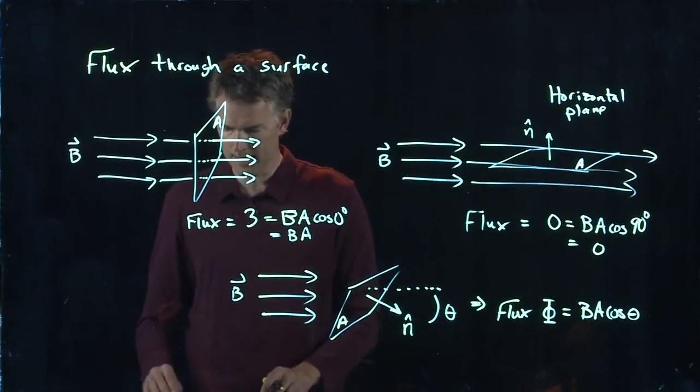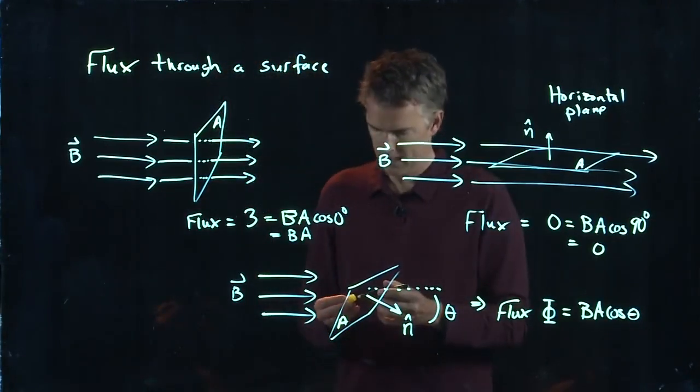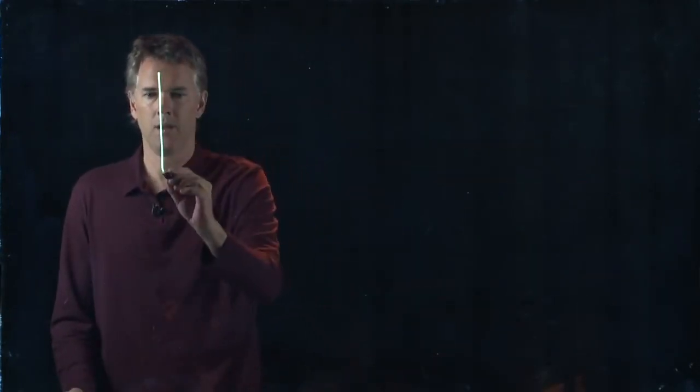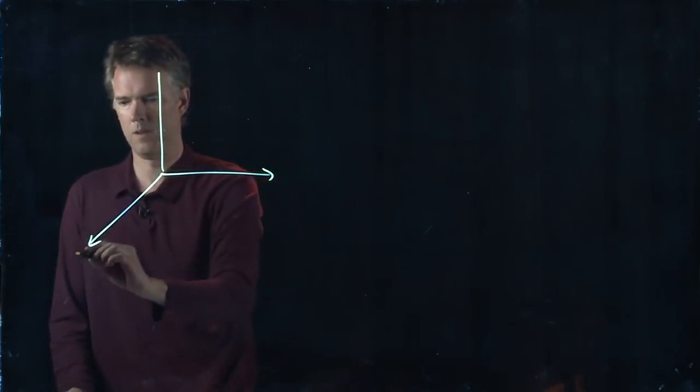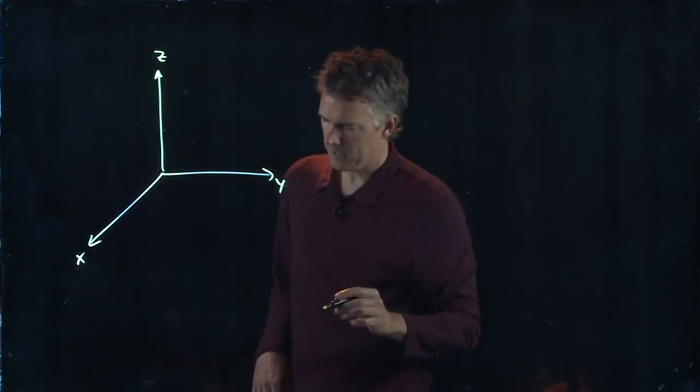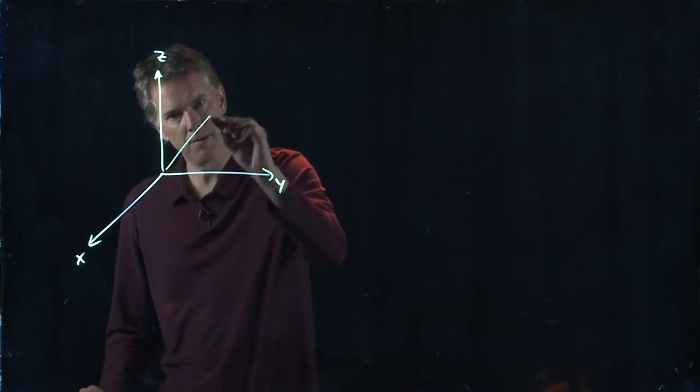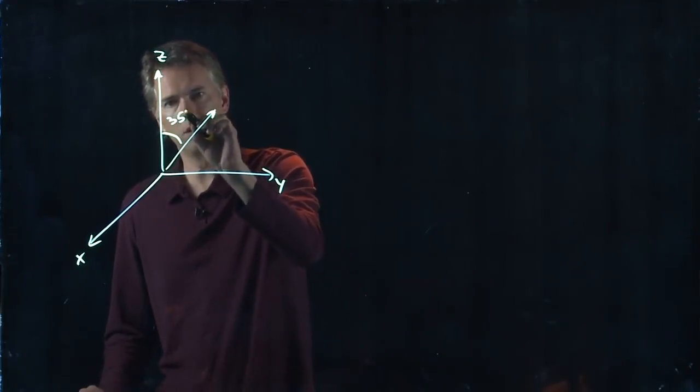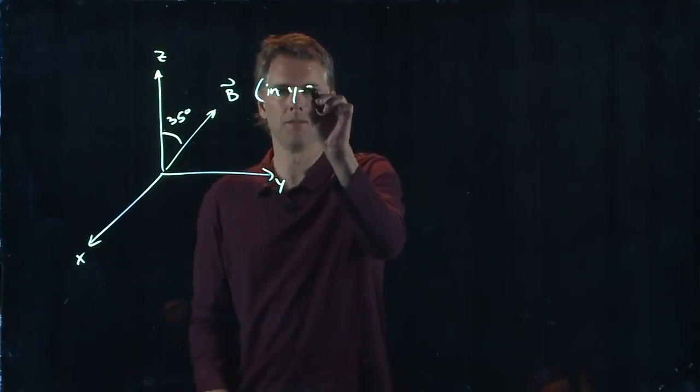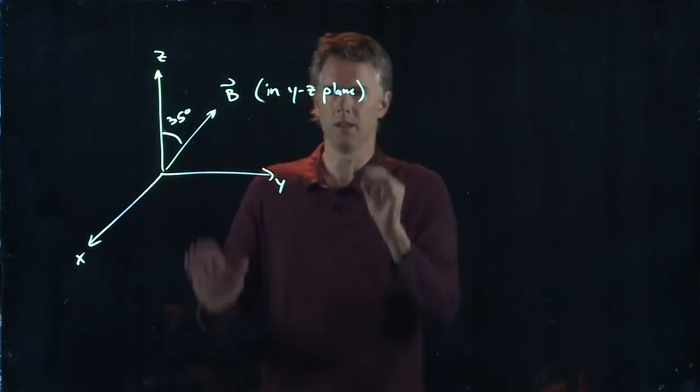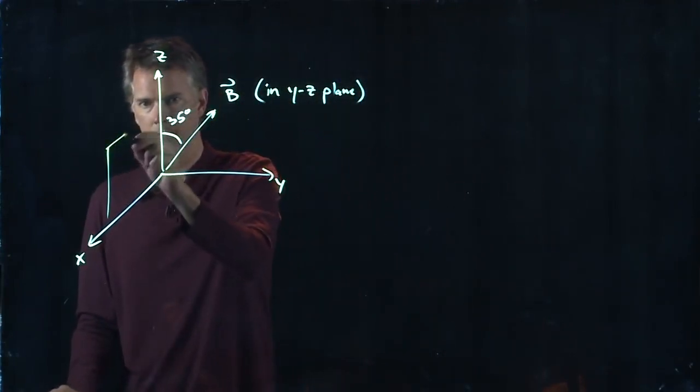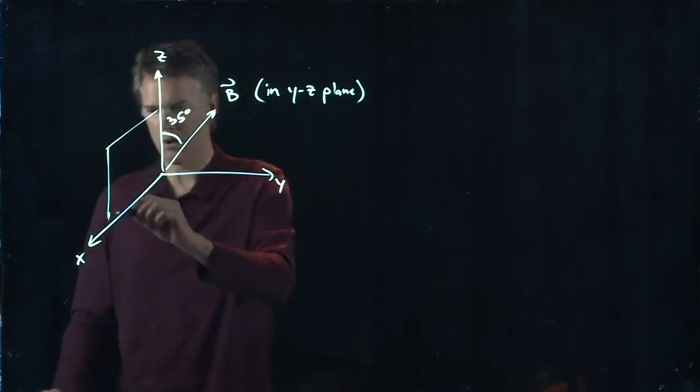Alright. So let's try this for an example. Let's try the following situation. Let's say we draw an XYZ coordinate system. Right-handed XYZ. And now let's have our B field pointing up at an angle of 35 degrees. And this is in the YZ plane. So it's in the plane of the glass here. And now let's draw two different areas. Let's draw this one.